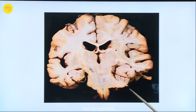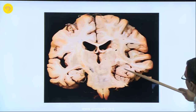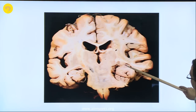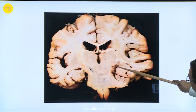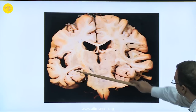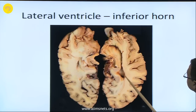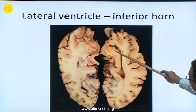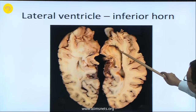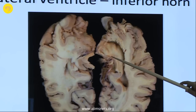The inferior horn is here — you can see the typical zebra-fish type of structure here. This is the inferior horn; the medial wall of the inferior horn is here, lateral wall is here. Now I will go to the inferior horn. The floor of the inferior horn is formed by the hippocampus, and this area is the dentate gyrus.